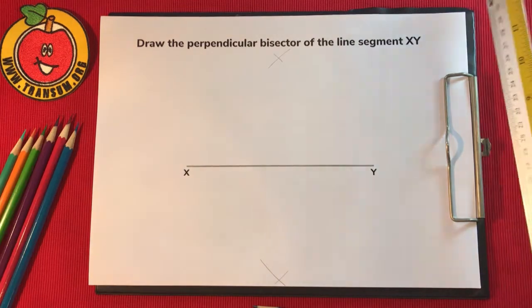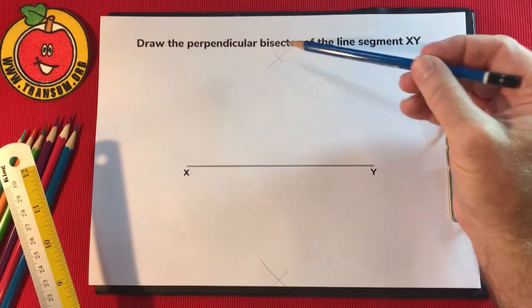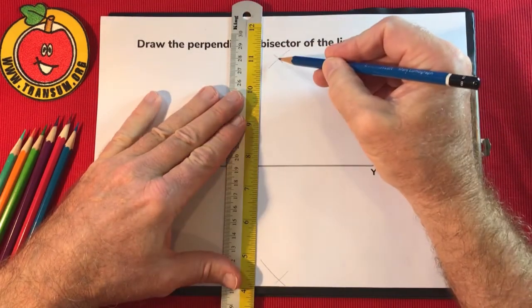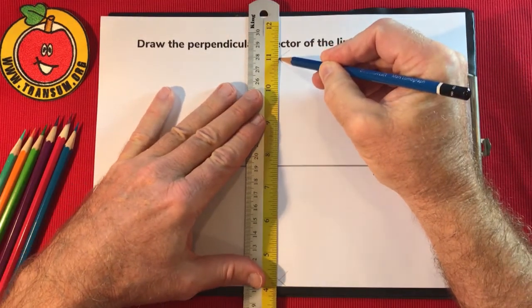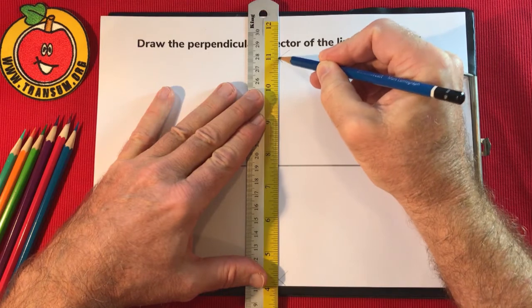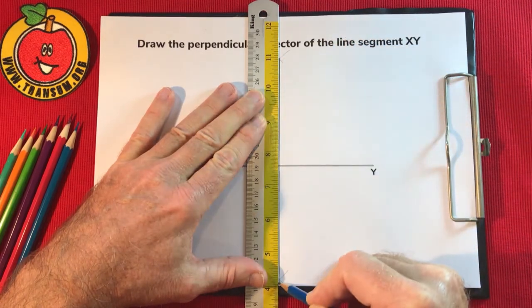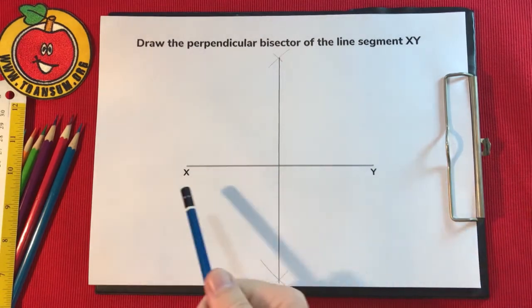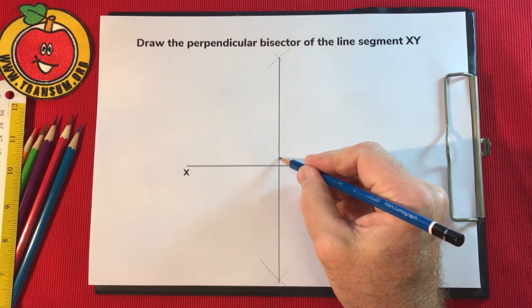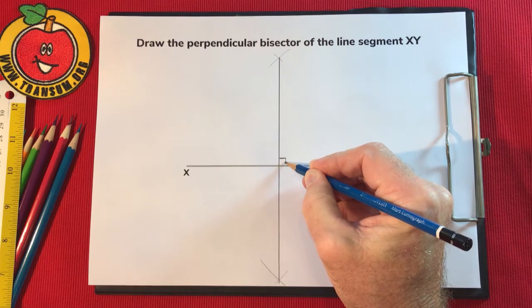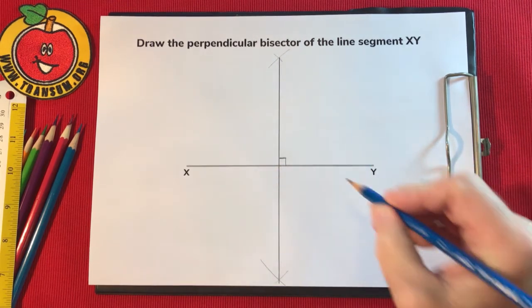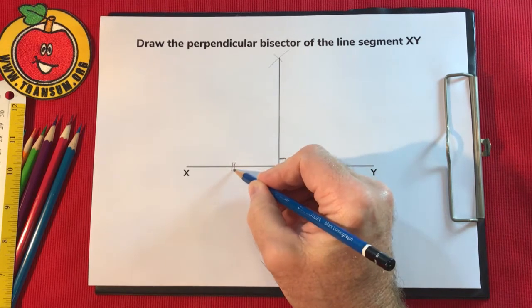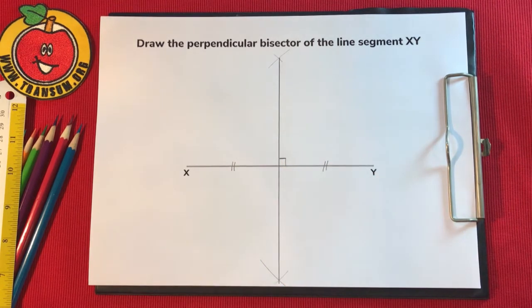Finally, join up the two crossing points of the arcs here and here. And this line is the perpendicular bisector of this line XY. So we know that it crosses and makes right angles, and we also know that this part of the line XY is the same as that part.